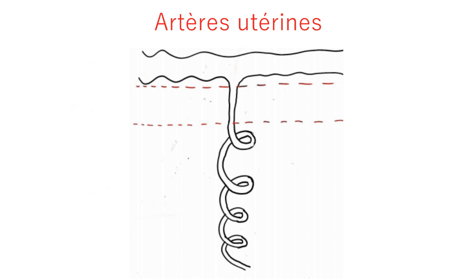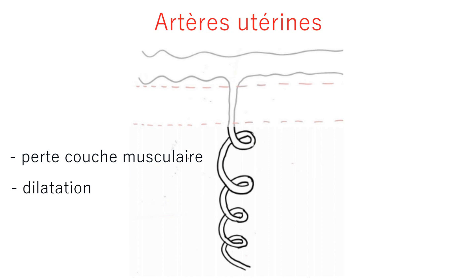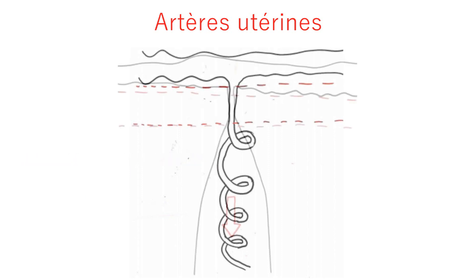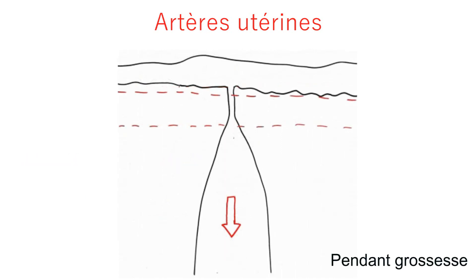Pour ce faire, les artères spiralées perdent leur tunique musculaire lors de l'invasion trophoblastique. Elles deviennent alors moins résistantes et se dilatent pour laisser passer plus de sang à faible pression.